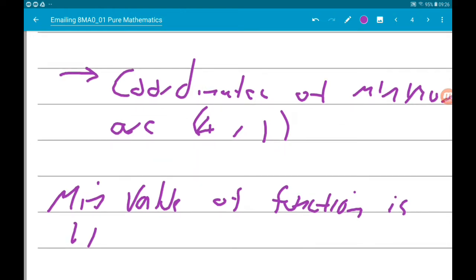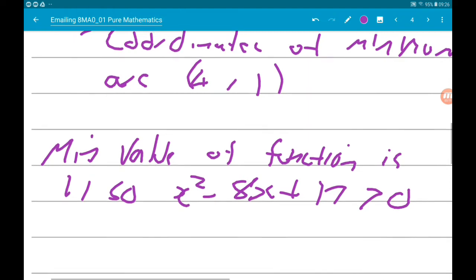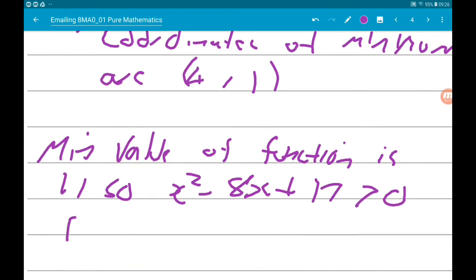So x squared minus 8x plus 17 is greater than 0, is always positive for real values of x. Okay, let's do the same thing by using differentiation.